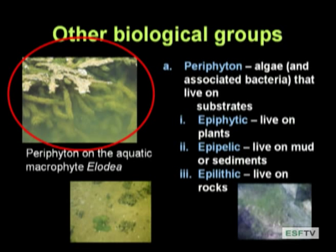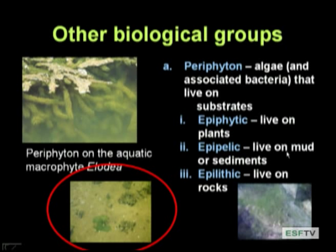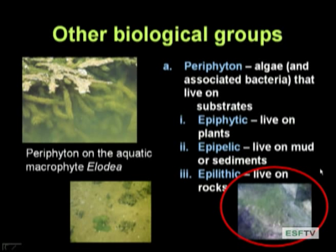We also have periphyton — algae and bacteria living on other surfaces. If you've ever walked in a stream and slipped on a rock, you've cursed periphyton. These algae grow on surfaces and are really productive. If growing on a plant, they're epiphytic ('phyte' means plant). If growing on soft sediment, they're epipelic. If growing on rocks — 'lith' means rock, think Paleolithic Stone Age — they're epilithic. These little algae growing on rocks have a whole host of other organisms eating them as well.